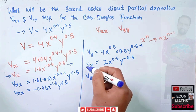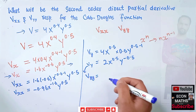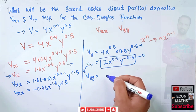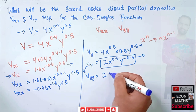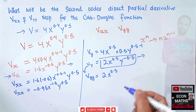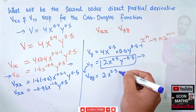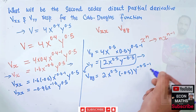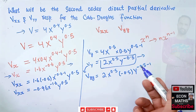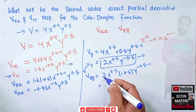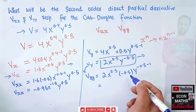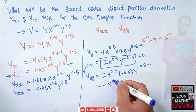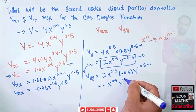For the second direct partial vyy, we take the derivative of vy again with respect to y. The exponent -0.5 becomes the coefficient, giving 2 * (-0.5) * x^0.5 * y^(-0.5-1). Since 2 * 0.5 = 1, we get vyy = -x^0.5 * y^(-1.5).